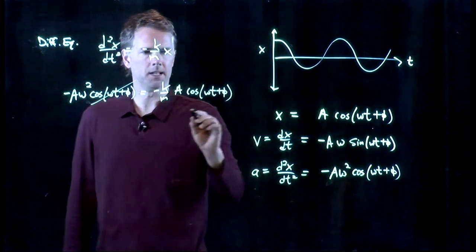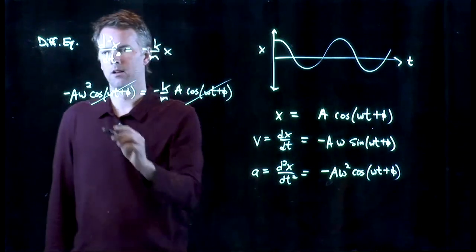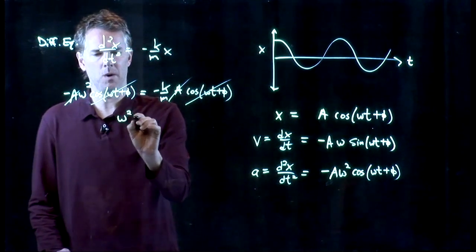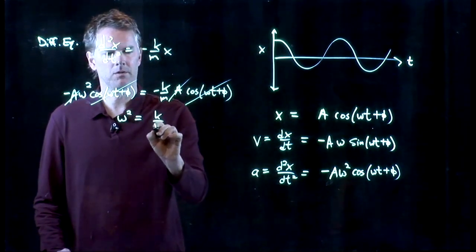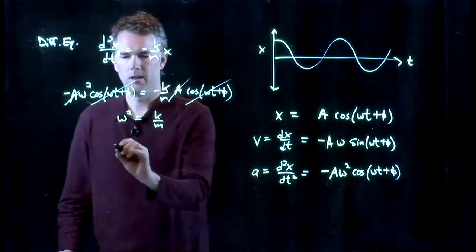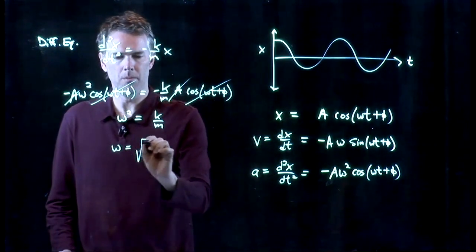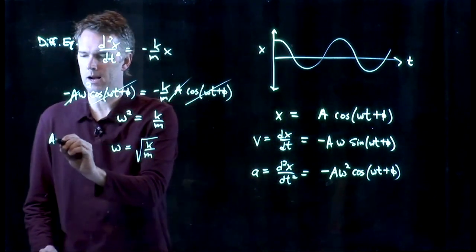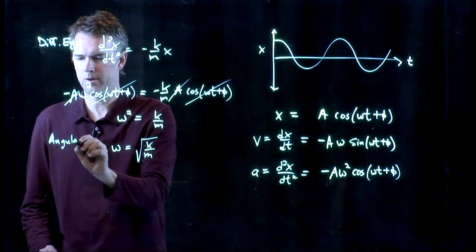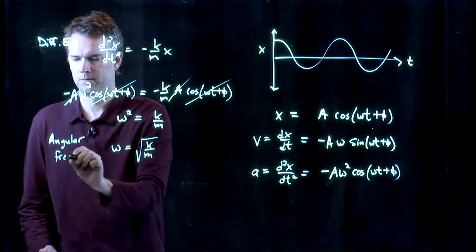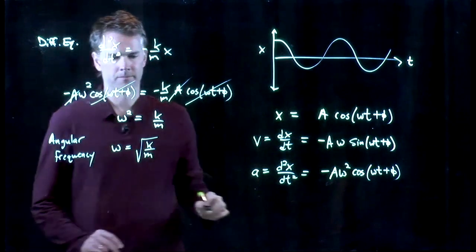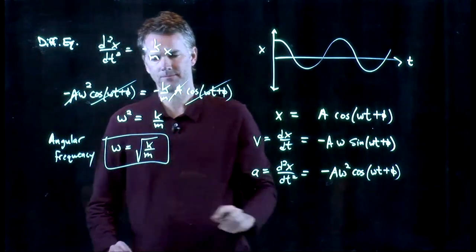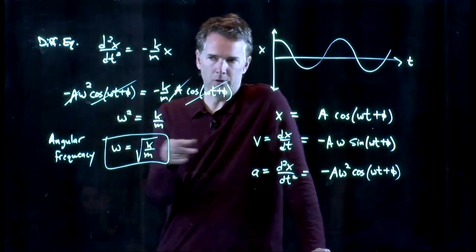And now a bunch of stuff cancels out. The A cosine omega t, we can cross that out. The capital A, we can cross that out. And we get omega squared equals k over m. The minus signs went away, and we end up with omega is the square root of k over m. And this is what we call our angular frequency. Omega is the square root of k over m.